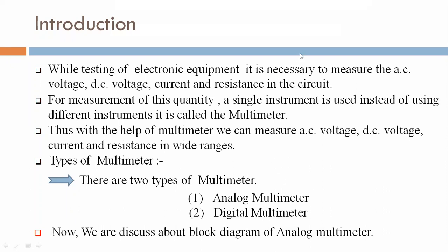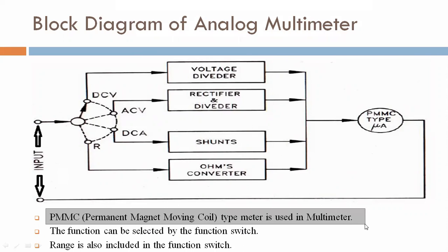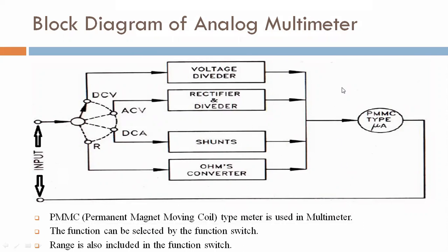Now we are looking at the block diagram of the analog multimeter. A PMMC — Permanent Magnet Moving Coil type meter — is used in the multimeter as the display element.